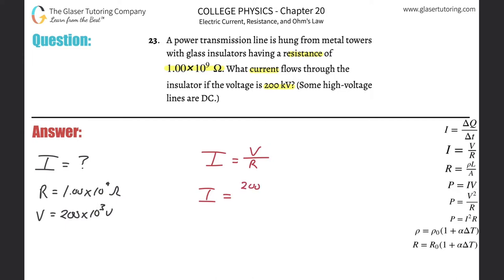200 times 10 to the 3rd, divided by 1.00 times 10 to the 9th. Let's see what we get now. 200 times 10 to the 3rd, divided by 1 times 10 to the 9th. 2.00 times 10 to the minus 4th, and that will be in terms of amps. And that is indeed now the current.